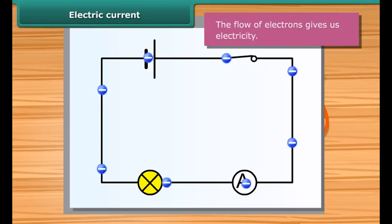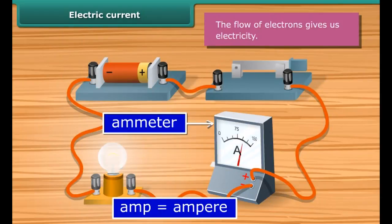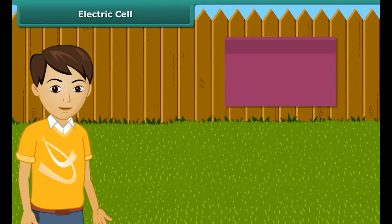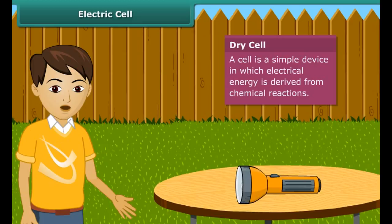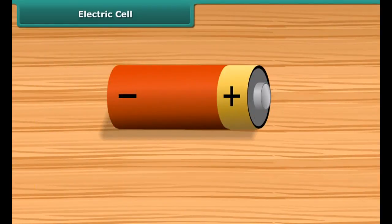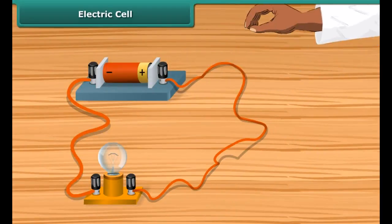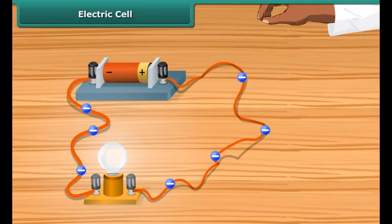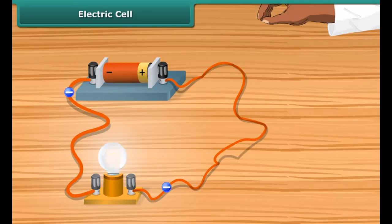We have studied about electric charges and the forces they exert on one another. There are two types of charges: positive and negative. When charges transfer from one body to another, the bodies are said to be charged. The moving or flowing charges produce an electric current.